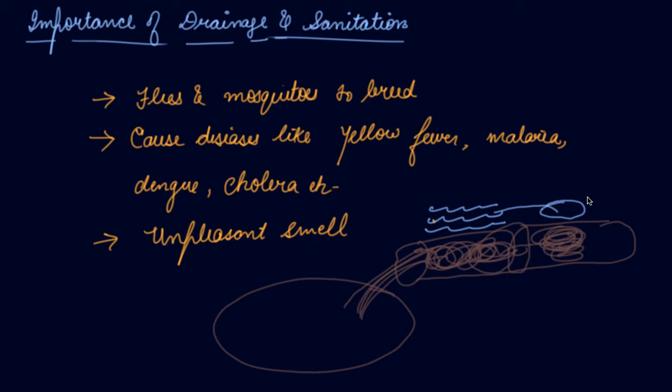Untreated or inadequately treated sewage is a major source of ground water and surface water pollution, which pollutes the land as well as the water.